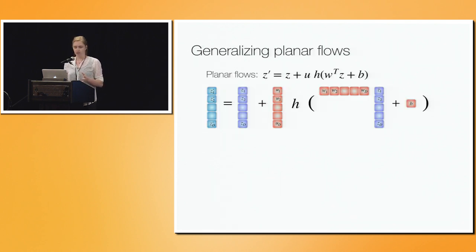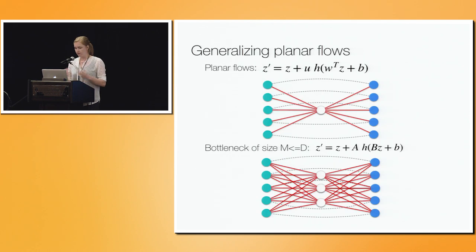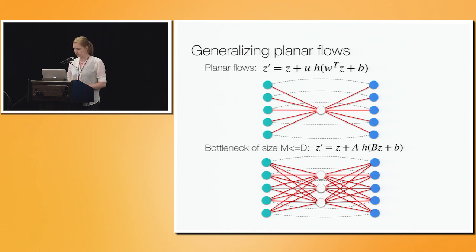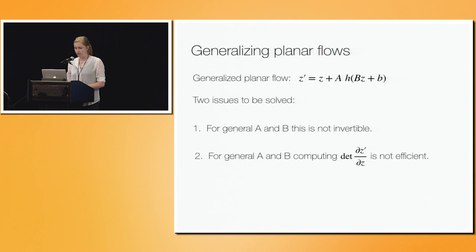To generalize planar flows, the simplest idea is to replace learnable vectors with matrices, giving a bottleneck of size M up to the latent dimension D. Reinterpreting this as a neural net relieves the bottleneck from size 1 up to size M, where M is a hyperparameter. To make this work we must solve two issues: for general matrices A and B this transformation is not invertible, and computing the Jacobian determinant is not efficient.